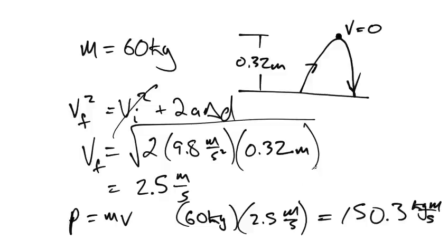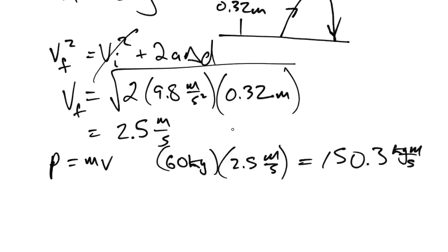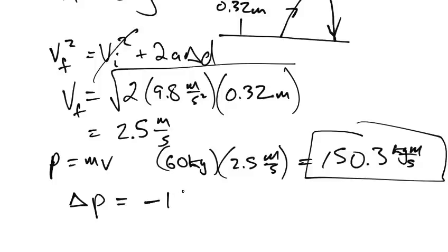Now, therefore, if we ask ourselves how much impulse is going to be needed to stop this person, how much is their momentum going to change by? Well, if that is their momentum downwards, the change in their momentum must be equal to that much negative, in order for their final velocity to come to a stop.